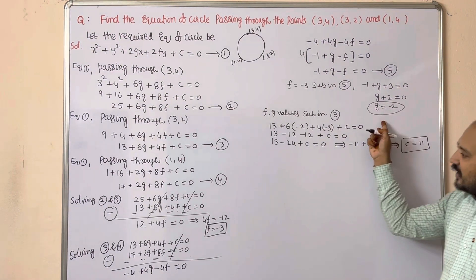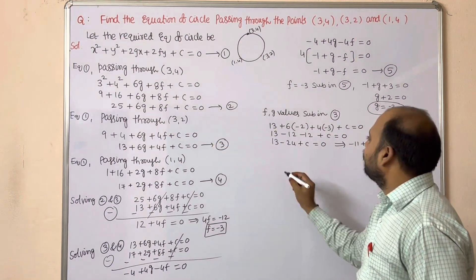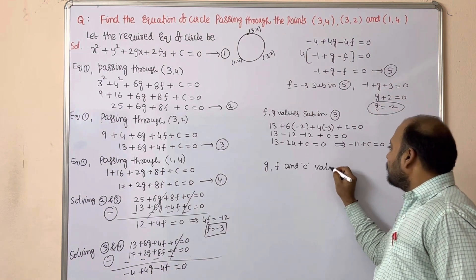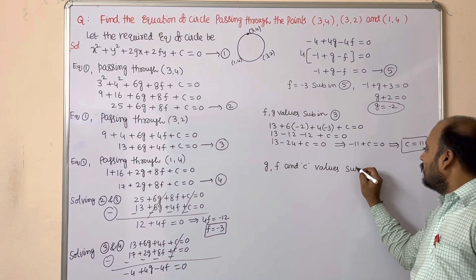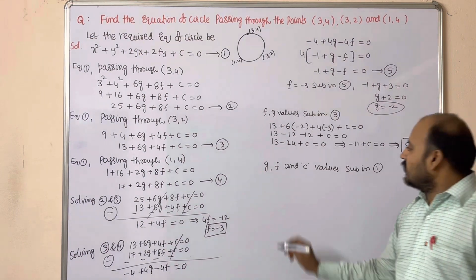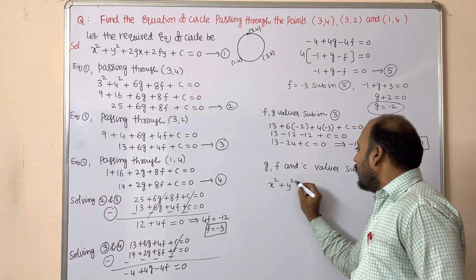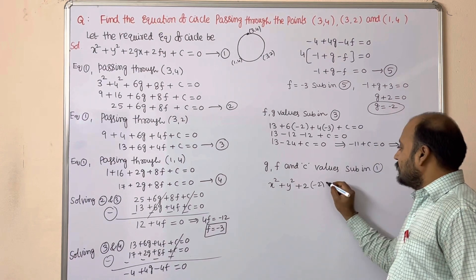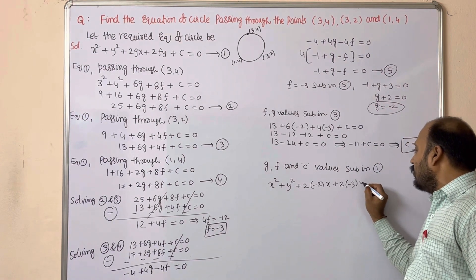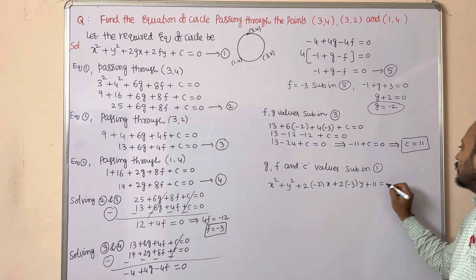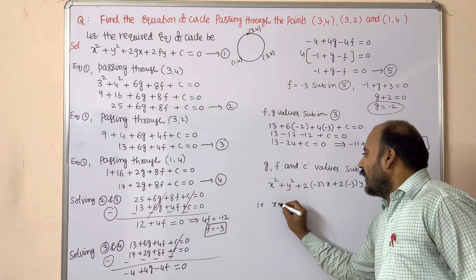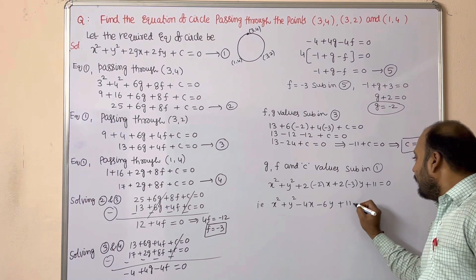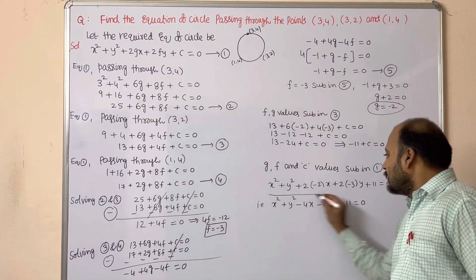Now substitute g = −2, f = −3, and c = 11 into Equation 1: x² + y² + 2(−2)x + 2(−3)y + 11 = 0, which simplifies to x² + y² − 4x − 6y + 11 = 0. This is the required equation of the circle.